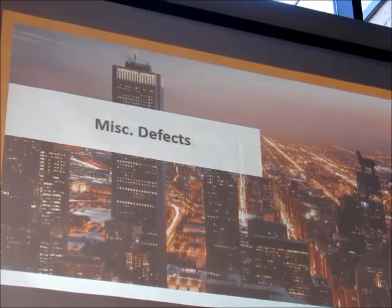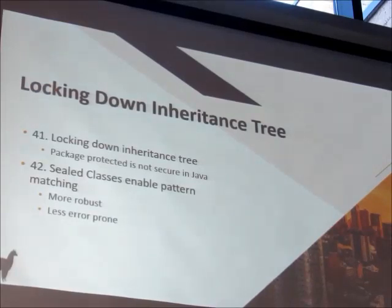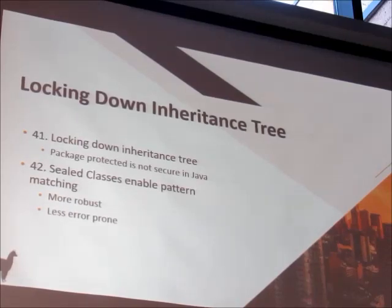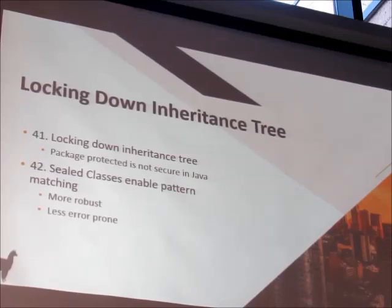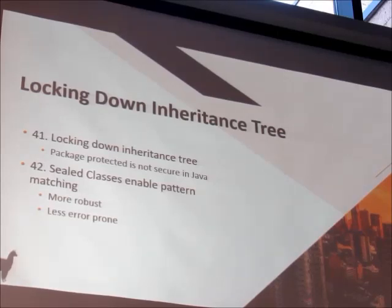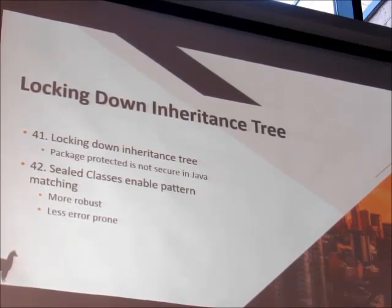Question: how does Kotlin prevent a sealed class from being subclassed externally but allow it internally? When you define a sealed class, it can only be extended from the same file. If you try to create another file and define a class that extends from this sealed class, it won't compile because it's not in the same file. Because of that, the compiler at compilation time knows all of the available classes that exist in that hierarchy, because they're all in that same file.